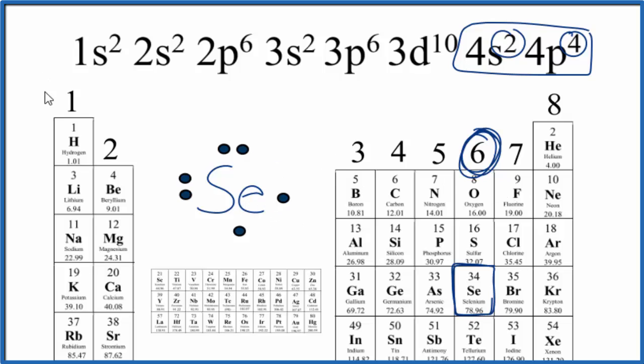So whether you look at the group numbers to figure out the number of valence electrons or the electron configuration, Se, selenium, has 6 valence electrons. This is Dr. B, thanks for watching.